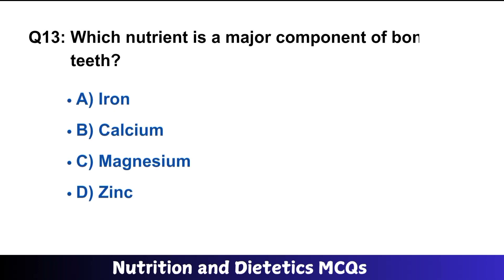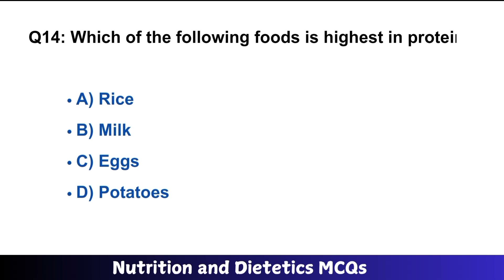Question number thirteen: which nutrient is a major component of bones and teeth? B is the right option: calcium. Question number fourteen: which of the following foods is highest in protein? C is the right option: eggs.